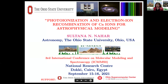I'll be talking about two particular processes. The title is photo ionization and electron-ion recombination of calcium ions for astrophysical modeling. These two particular processes contribute to the spectroscopy in astrophysical plasmas or normal plasmas, and particularly for calcium ions, which I have chosen as an example.